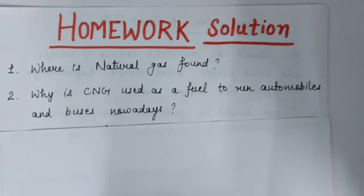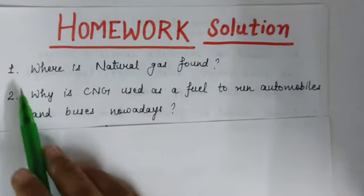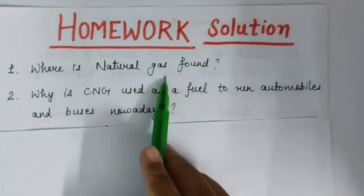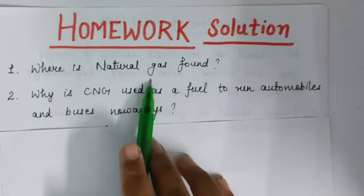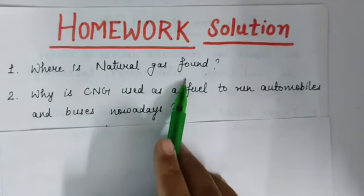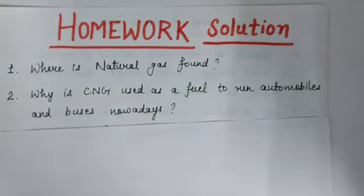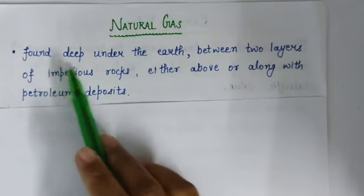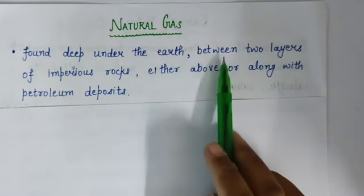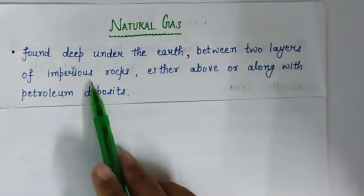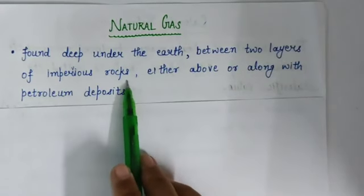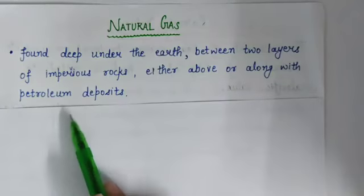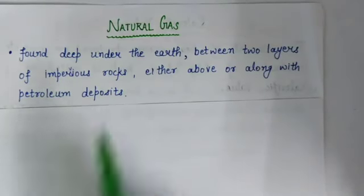Now we will discuss the homework solutions from the previous lecture. Question 1 was: where is natural gas found? Answer: it is found deep under the earth, between two layers of impervious rocks, either above or along with petroleum deposits.